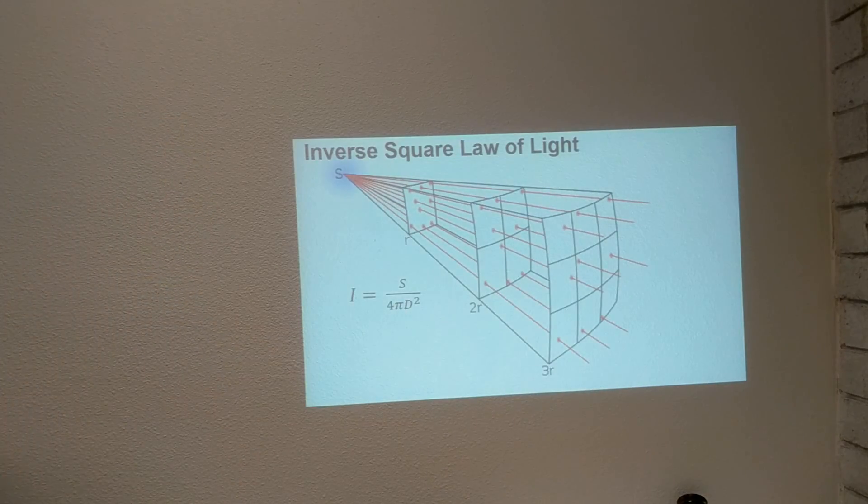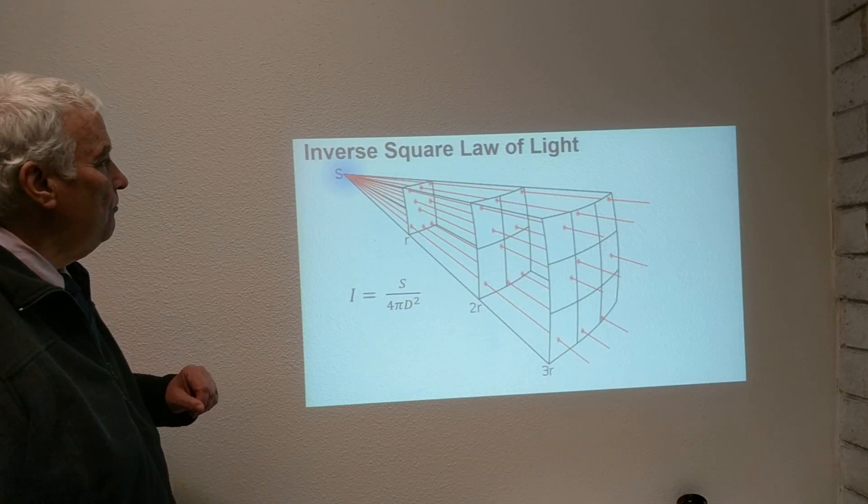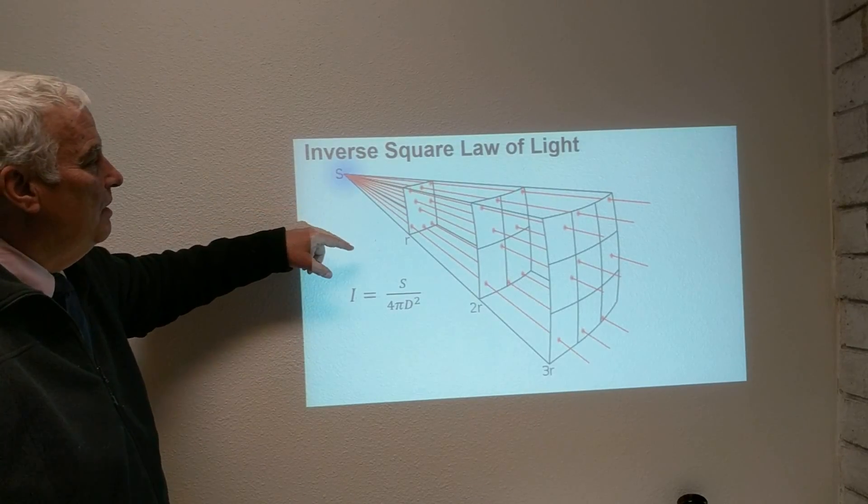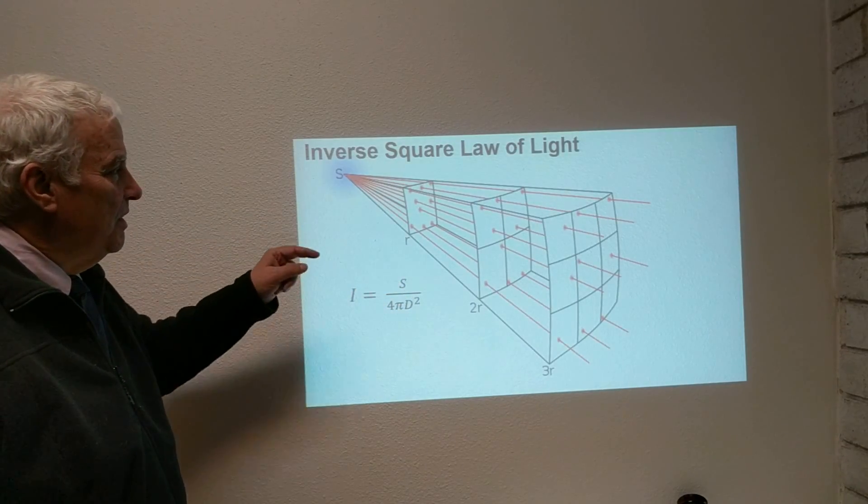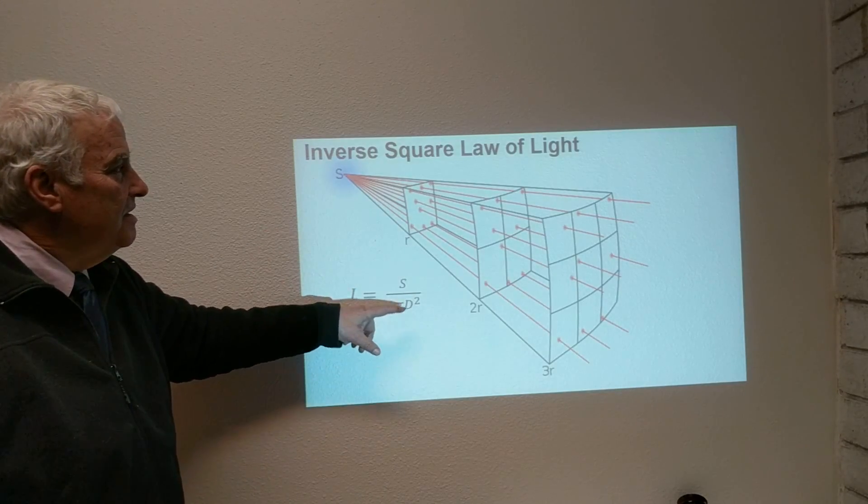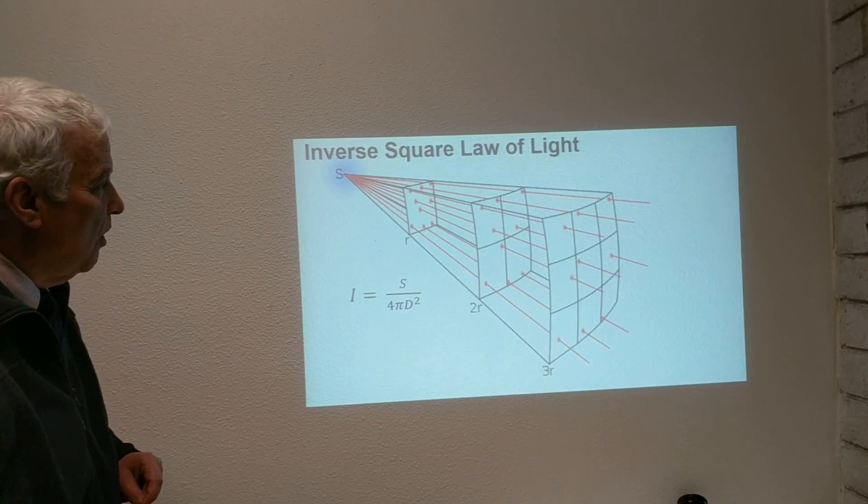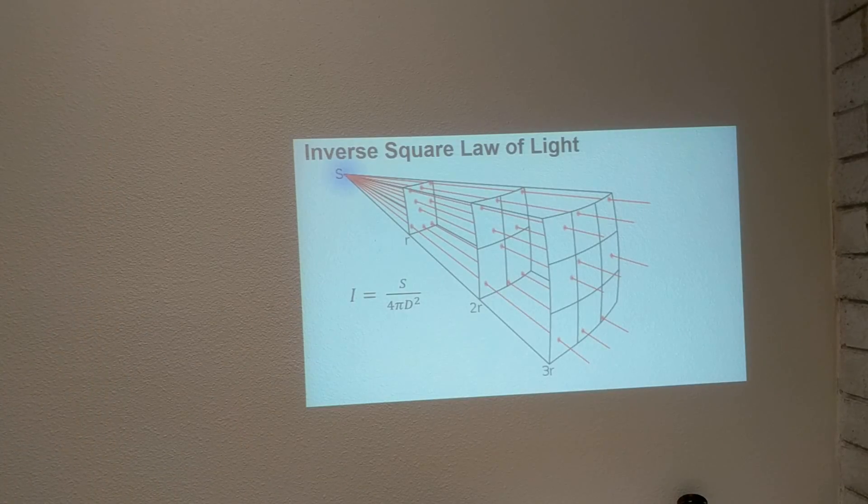So the square of the distance is how the brightness changes as a function of the distance from the source. We look at the term inverse square law of light. Inverse meaning we have less light, lower brightness as we go further out. The square because it's the distance squared that determines how that brightness falls off.